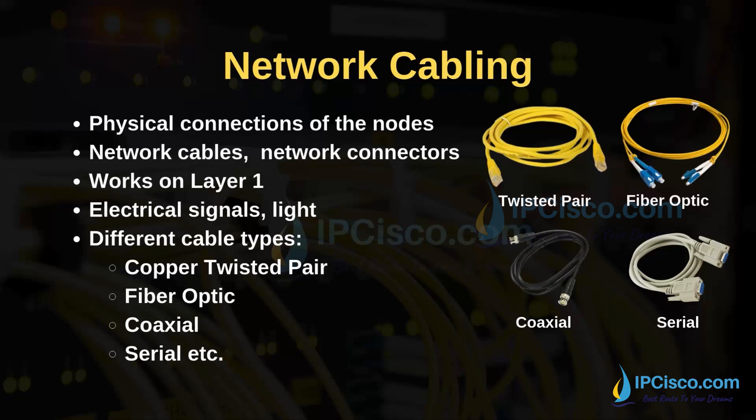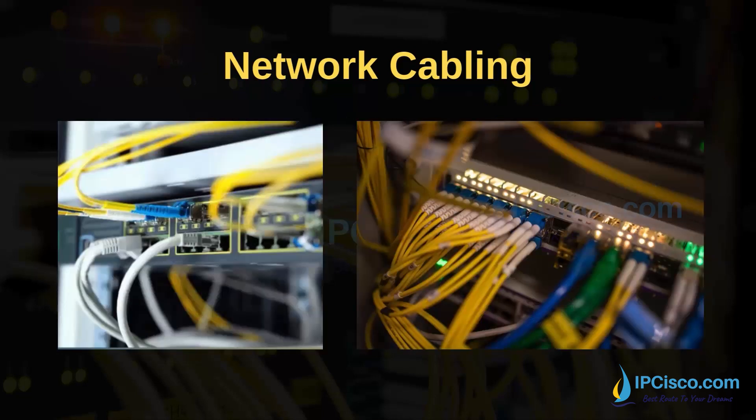The data is transferred over these mediums with electrical signals or light. According to the need of the network, there are various network cable types. The main network cable types are copper twisted pair, fiber optic cable, coaxial, and serial cables. You can see each of these cable types on the screen, along with where we use these cables or where we plug them.